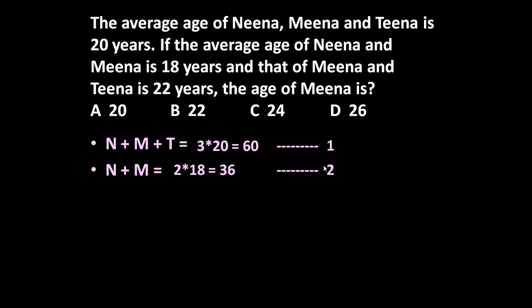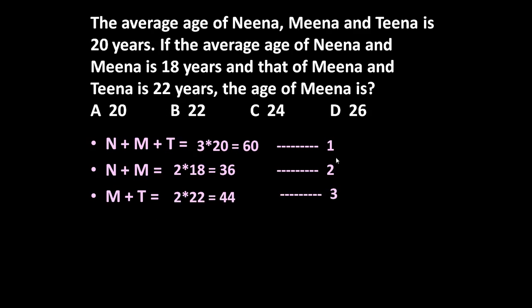The third statement is that of Mina and Tina is 22 years, meaning Mina plus Tina's average is 22 years. So the total age of Mina plus Tina is 2 into 22, which is equal to 44. This is equation number 3.